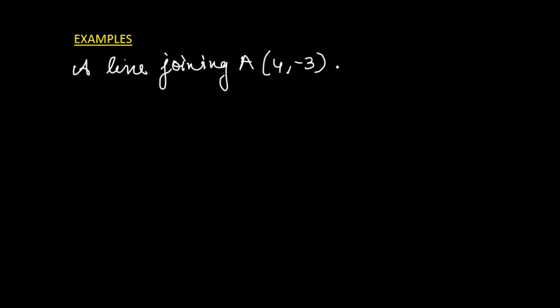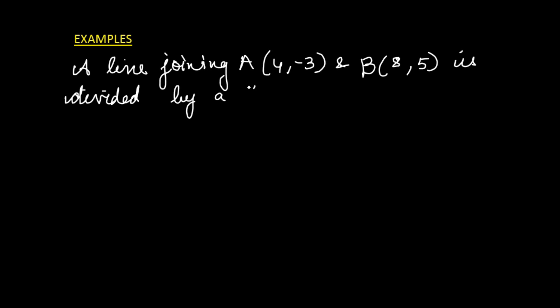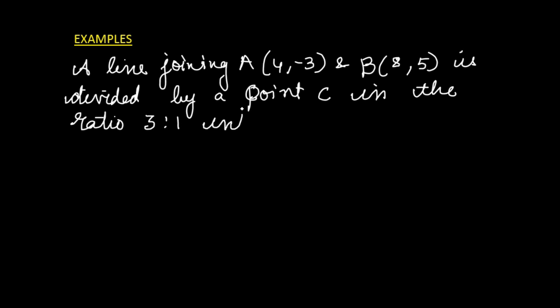Let us quickly take an example. Suppose there is a line joining point A with coordinates (4, -3) and point B with coordinates (8, 5). The line segment AB is divided by point C in the ratio 3 is to 1 internally. Internally means the point is lying on the line itself. We have to find the coordinates of C.